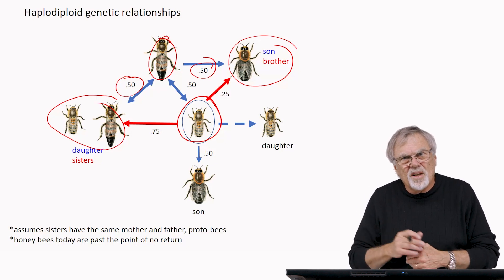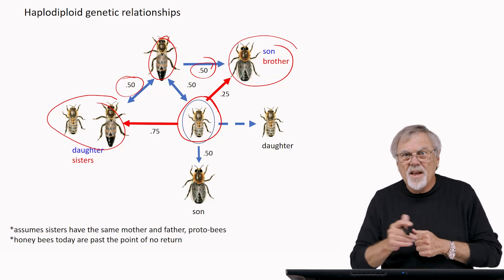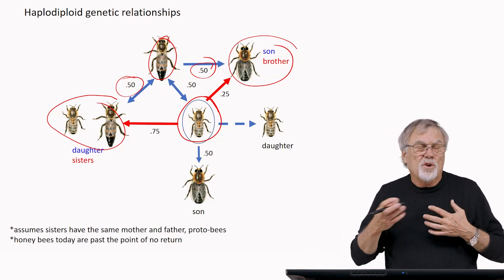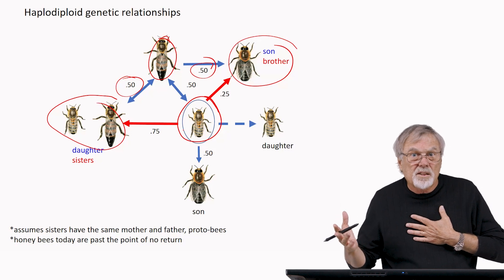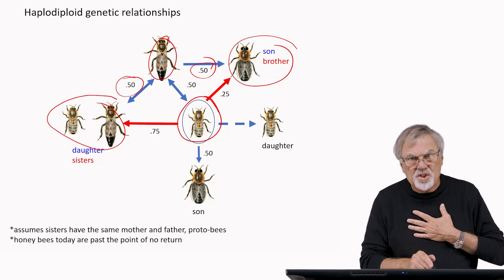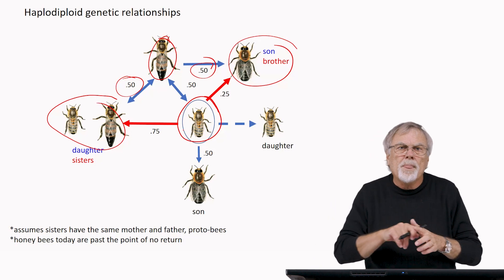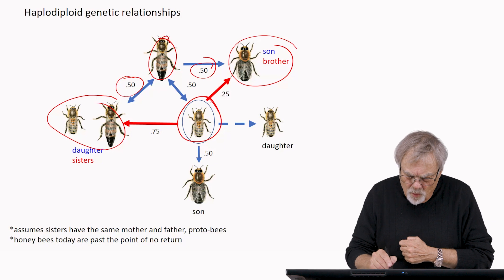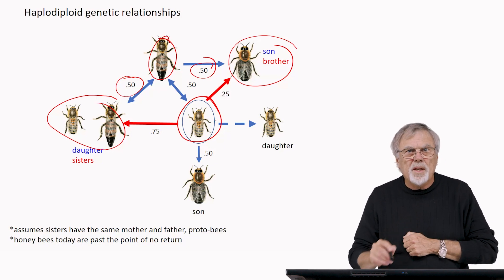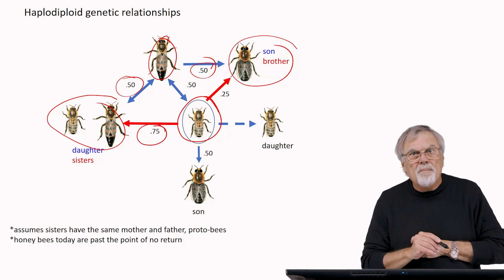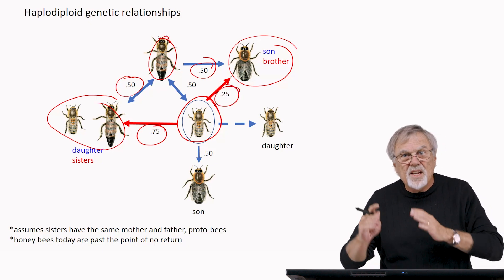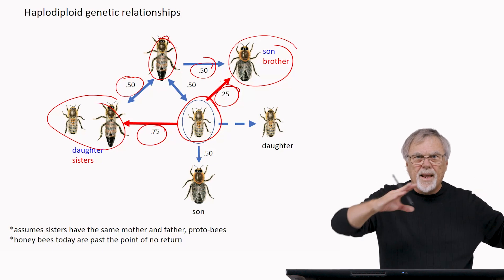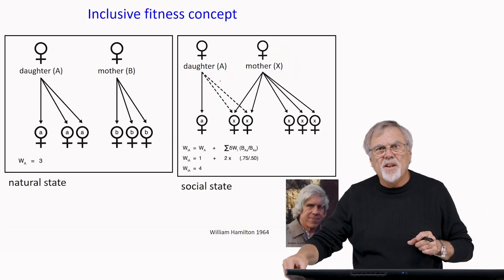So there's an asymmetry of relatedness — an asymmetry in the likelihood that if you raise your brother, he will share an identical gene with you, say for altruism, that was inherited from your parents. It's only 25% versus 75% for sisters. So in order for altruism to spread, the workers need to be raising more females than males — they need to skew that sex ratio towards females. If they can do that, then they can increase what we call their inclusive fitness.